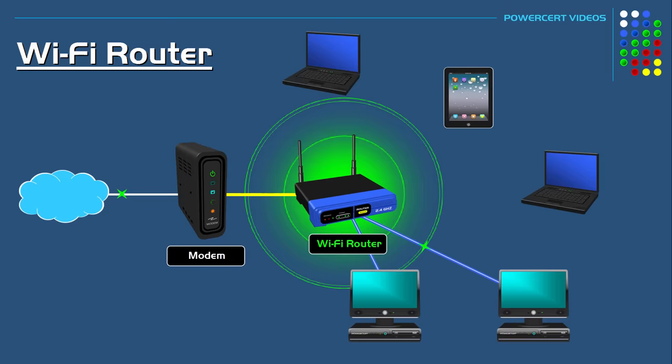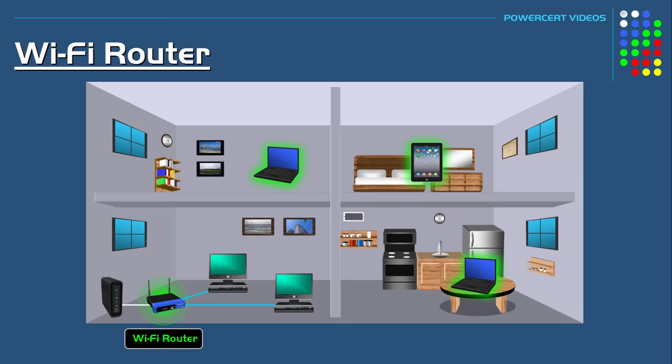Wi-fi routers are mainly used in homes and small offices. Here we have a typical home where a couple of desktops are connected to the wi-fi router's built-in switch using cables, and we also have laptops and tablets that are connected wirelessly to the router.